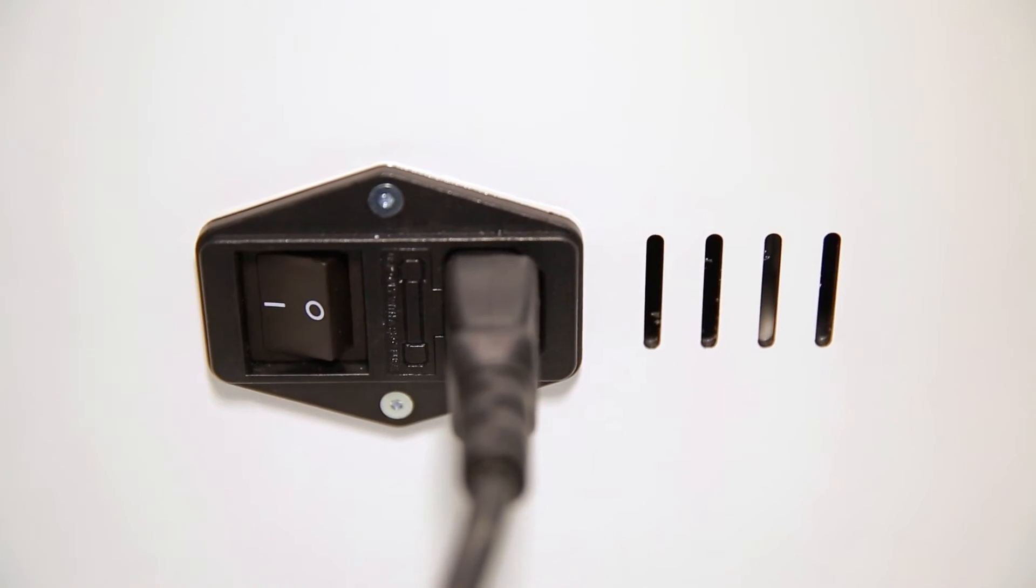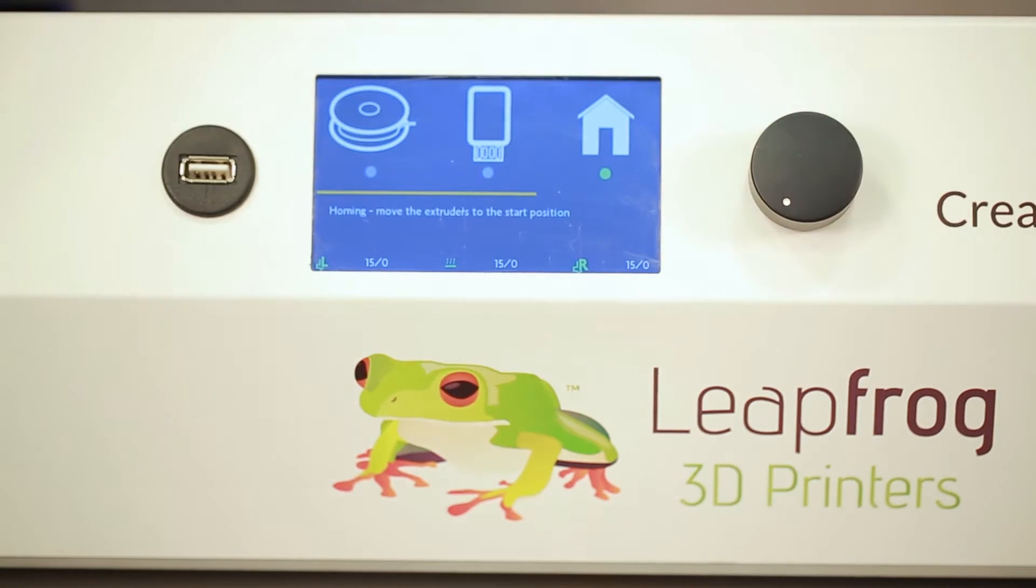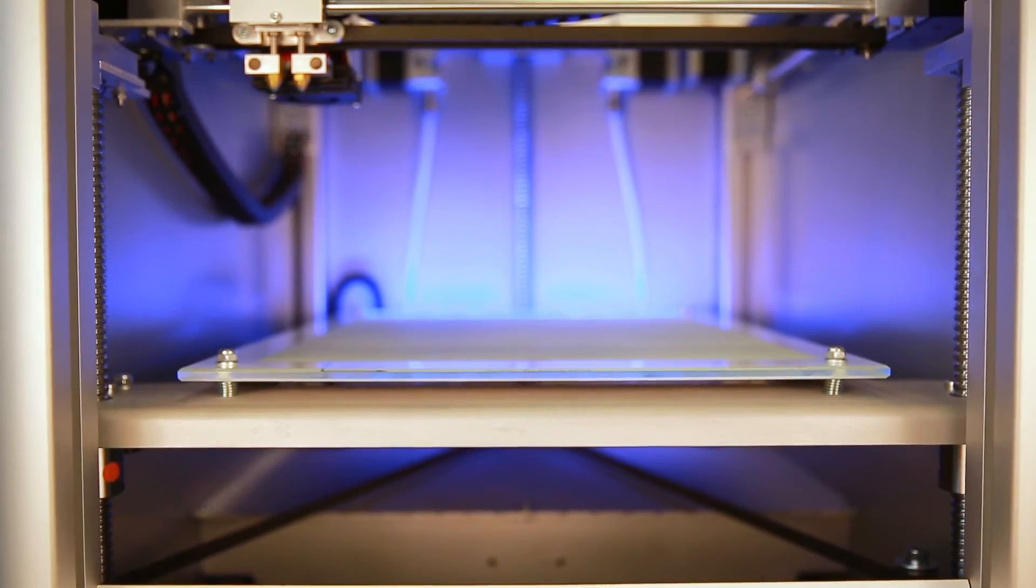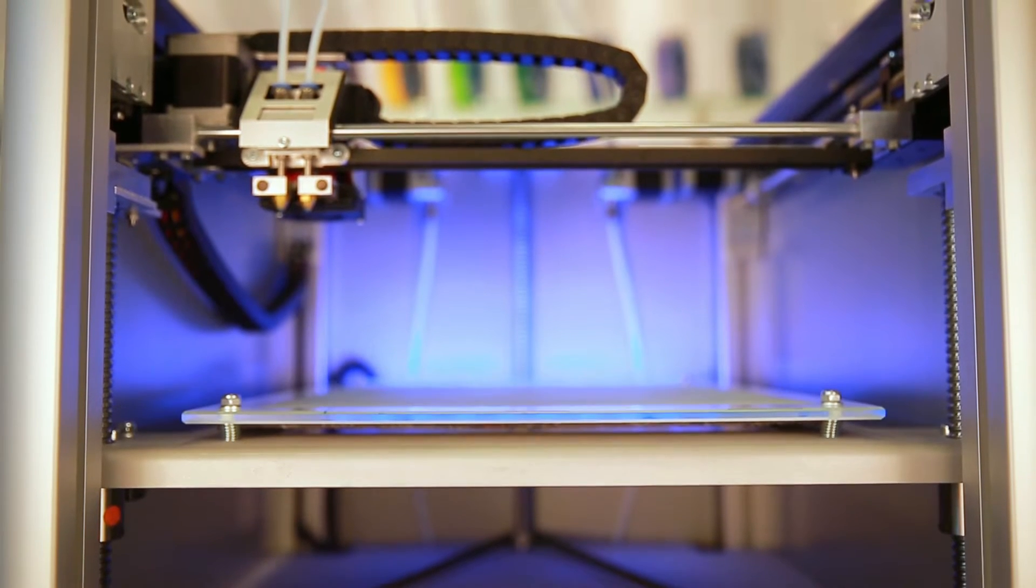Turn on the Creator HS. Home the printer by selecting the home option from the menu. Homing your printer is very important. Make sure that the printer is aware of its coordinates and will not perform out of bounds movements.